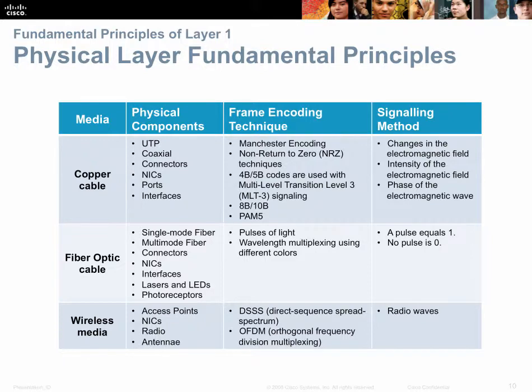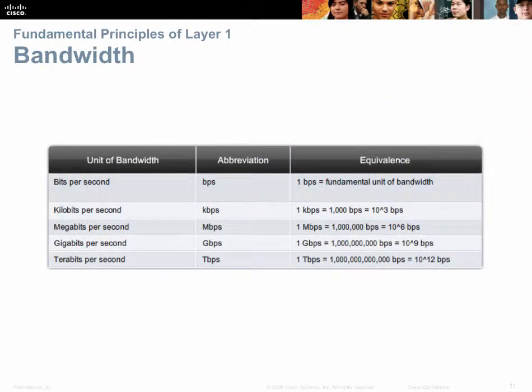We currently have three mediums for physical layer signaling: copper, fiber, and wireless. When we talk about bandwidth, we can measure it digitally or in an analog sense. Analog bandwidth is measured in hertz or cycles per second. Digital bandwidth measures how much data can move through a wire in a second — bits per second, or kilo, mega, giga, or terabits per second.